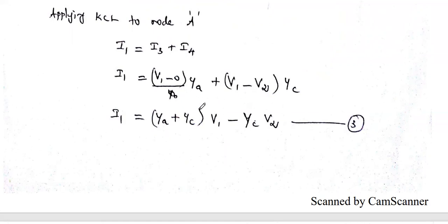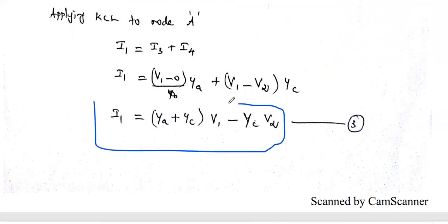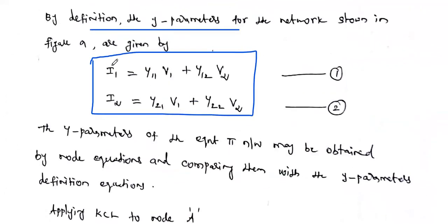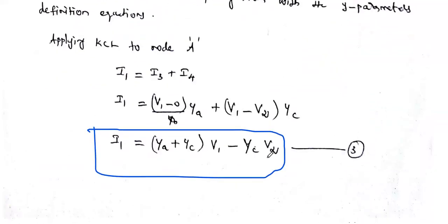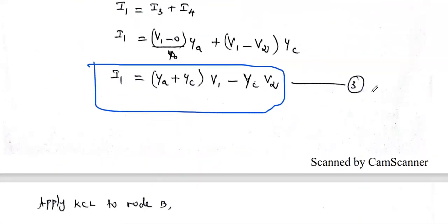Collecting the V1 terms and V2 terms separately, we get I1 expressed in terms of V1 and V2. This equation has the same structure as the first Y-parameter equation — I1 in terms of V1 and V2. Call this equation number 3.